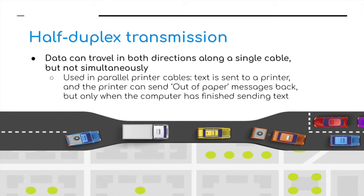Half-duplex transmission is where data can travel in both directions across a single cable, but not simultaneously. For example, it's used in parallel printer cables: text is sent to the printer, and the printer can send an out-of-paper message back to the computer, but only when the computer has finished sending the text. A good analogy is walkie-talkies — one person talks, then waits, and the other responds.